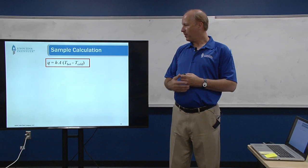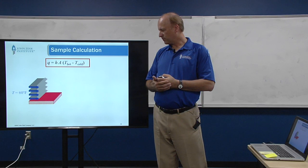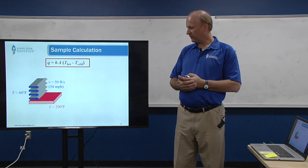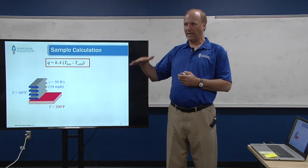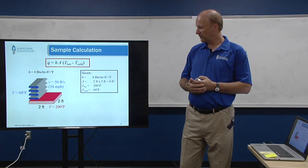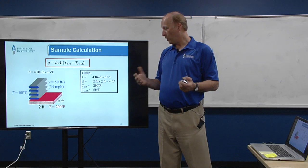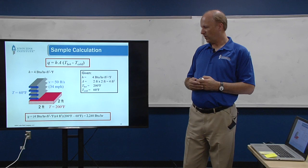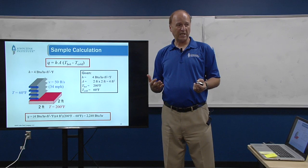Sample calculation: if we have flow over a plate of known size, with known fluid and plate temperatures, and the plate is transferring heat to the cooling fluid, and we have a certain velocity, we can look up or calculate the convection coefficient. In this case I'll give you H, but that's really where most of the work comes in. Once you have H, the calculation is very simple — plug and chug — and you get a result in BTUs per hour.